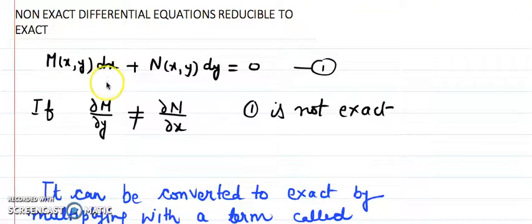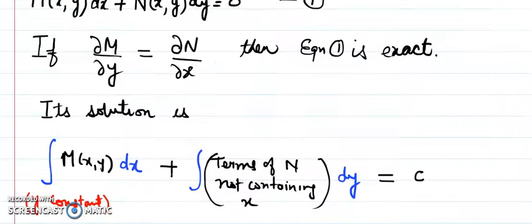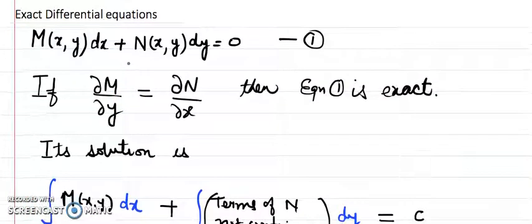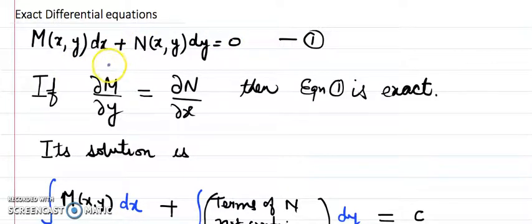Today I'm going to discuss the topic of non-exact differential equations which can be reducible to exact. Before switching to this topic, let us quickly recall what we mean by exact differential equations. They are first order linear differential equations written in this form: M dx plus N dy equals zero. This kind of differential equation is known as exact.